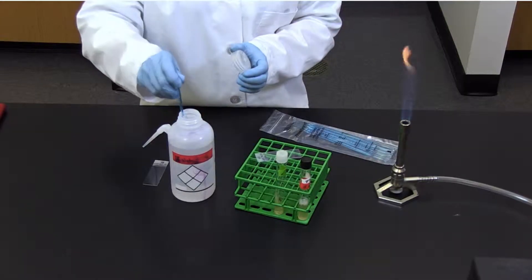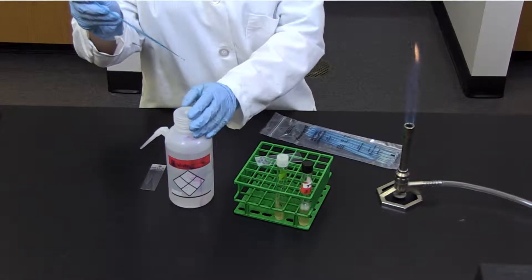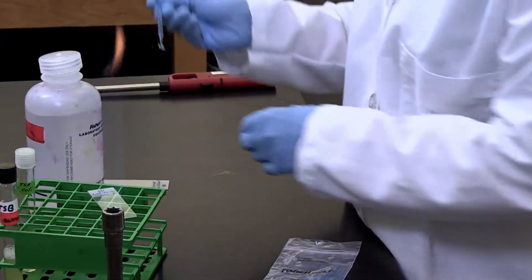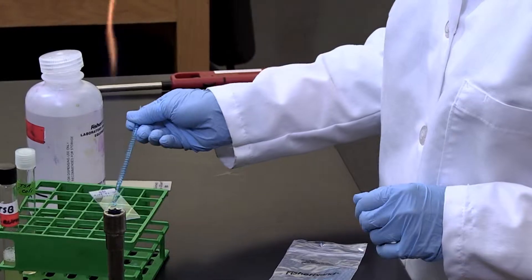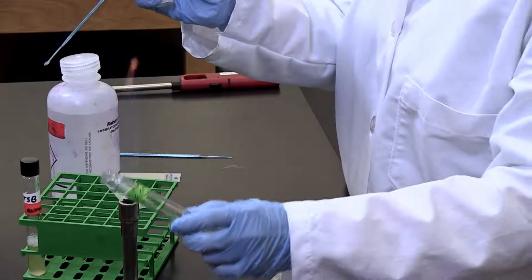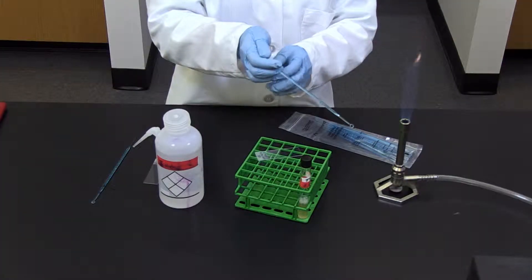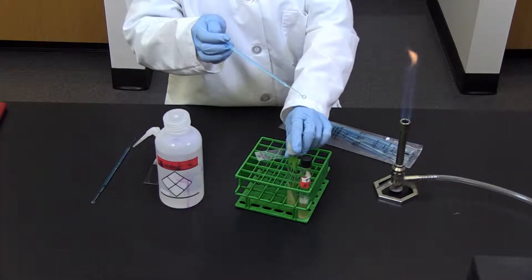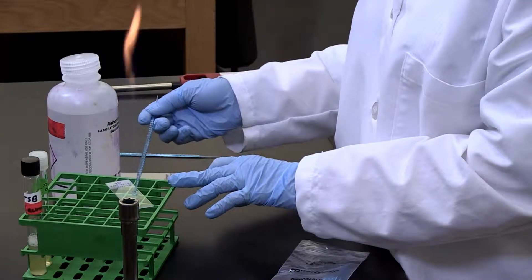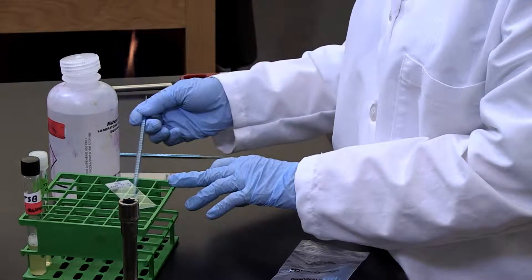Second, place enough deionized water to fill an inoculating loop, we'll call this a loop full, on the center of the slide. Third, use an inoculating needle to aseptically add a minute amount of bacterial growth to the water. Spread the bacterial suspension over the center of the slide, covering an area about the size of a quarter.